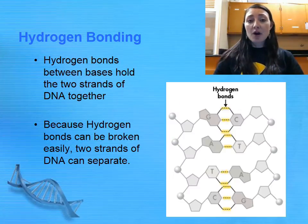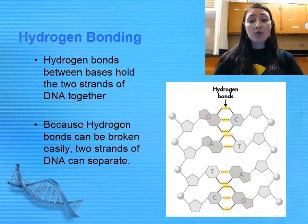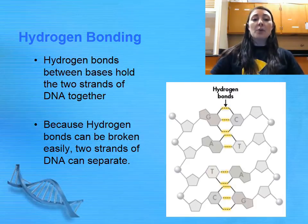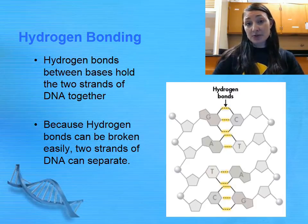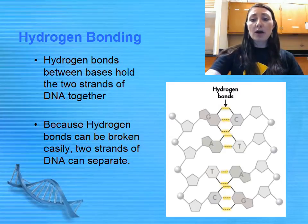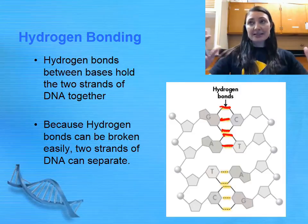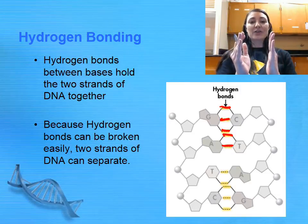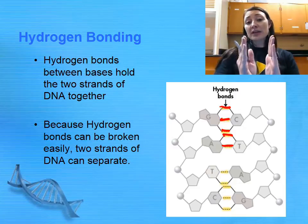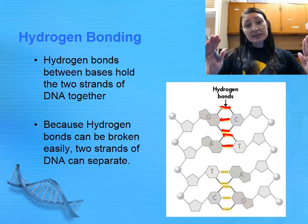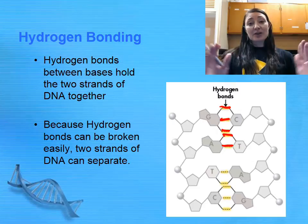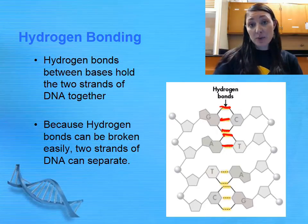Hydrogen bonds are the type of intermolecular force that holds together your bases. It is not a covalent bond, so it's a weaker bond, but hydrogen bonds are the strongest of those intermolecular forces. Between guanine and cytosine there are three hydrogen bonds, and between adenine and thymine there are only two. The nice thing about a hydrogen bond is it's strong enough to hold your two strands of DNA together, yet weak enough that you can break it apart pretty easily, which is necessary to separate the two strands as DNA goes through replication.